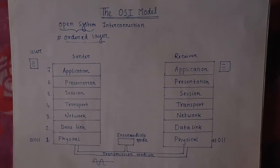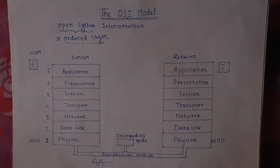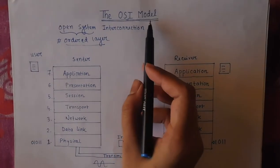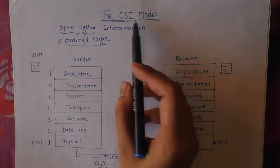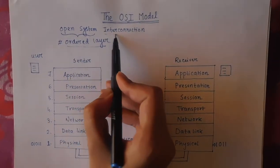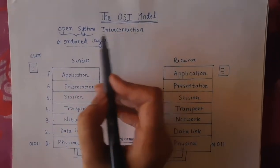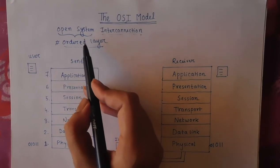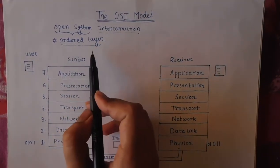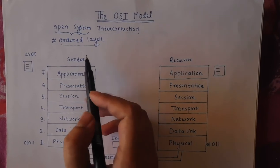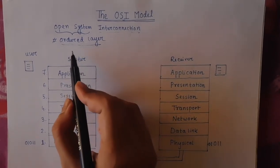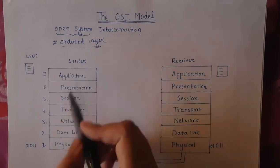Hello everyone, welcome to Computer IT. Today we will learn about the OSI model. The full form of OSI is Open System Interconnection. Open systems allow two different communicating devices with different architectures to communicate.